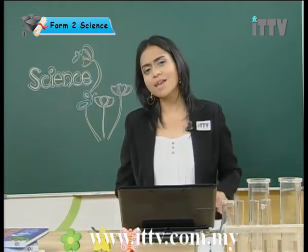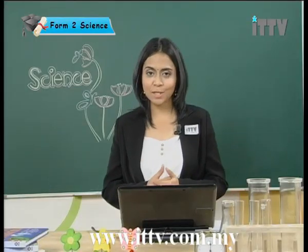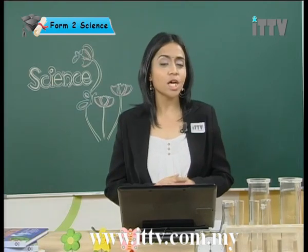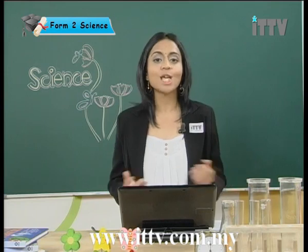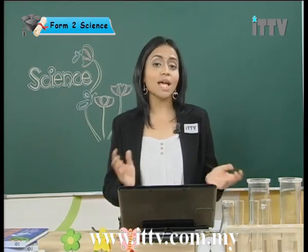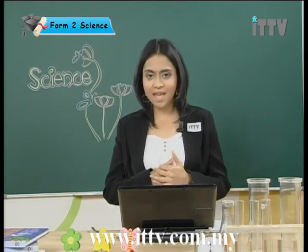We have five different kingdoms: firstly, animals or Animalia; next, plants or Plantae; then fungi; and bacteria, also known as Monera; and lastly, very simple organisms called Protista. These are the five main kingdoms that classify all living organisms on earth. Among these five, the two most popular are the animal kingdom and the plant kingdom, which we will cover in future lessons.